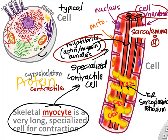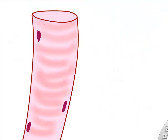The cell membrane of muscle cells is called the sarcolemma — it's just new vocabulary for things we've already learned. If you hear sarcolemma, just think cell membrane. There are also little indentations or tunnels in the sarcolemma called T-tubules.